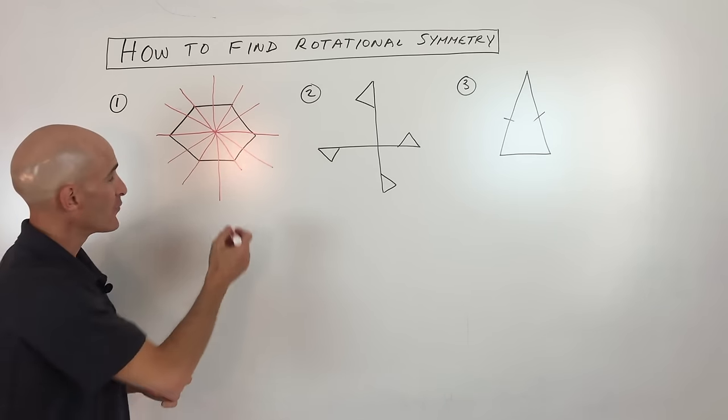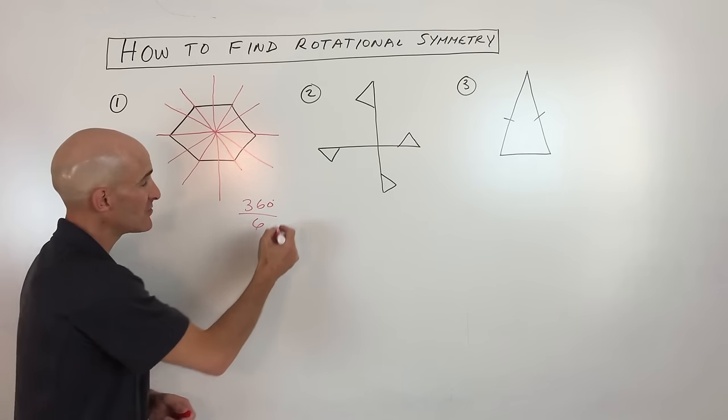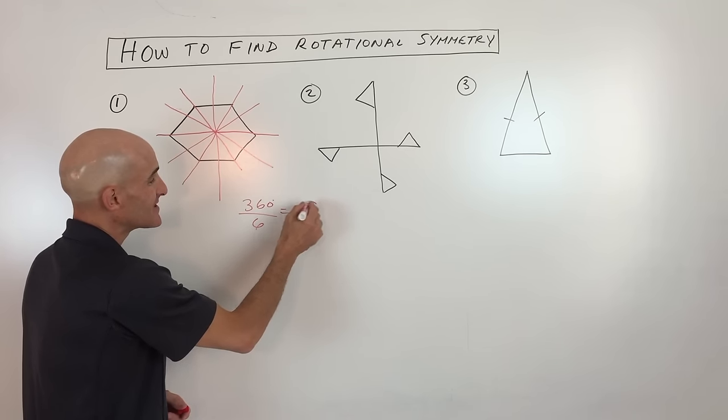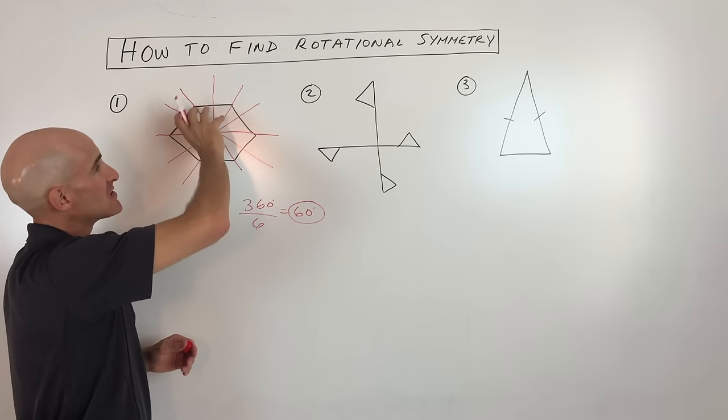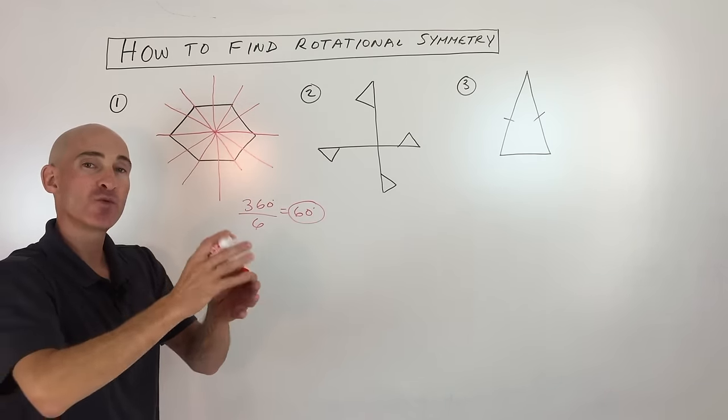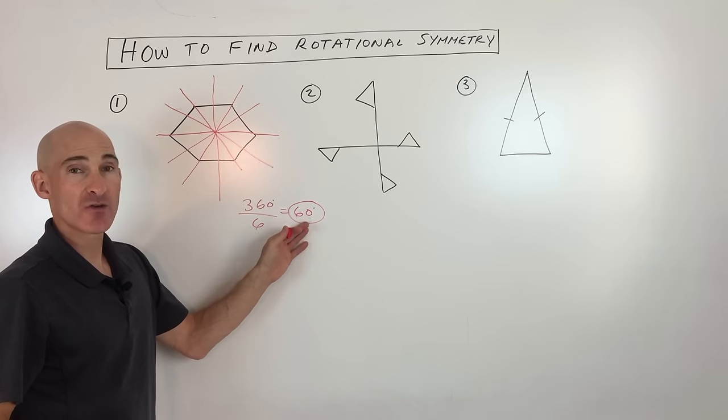So there's six lines of symmetry. If we take 360 degrees divided by the six lines of symmetry, you can see we're getting 60 degrees. So what that means is that if we rotate about this point 60 degrees, it's just like a knob, this object will match up with itself. So we can say this has 60 degree rotational symmetry.